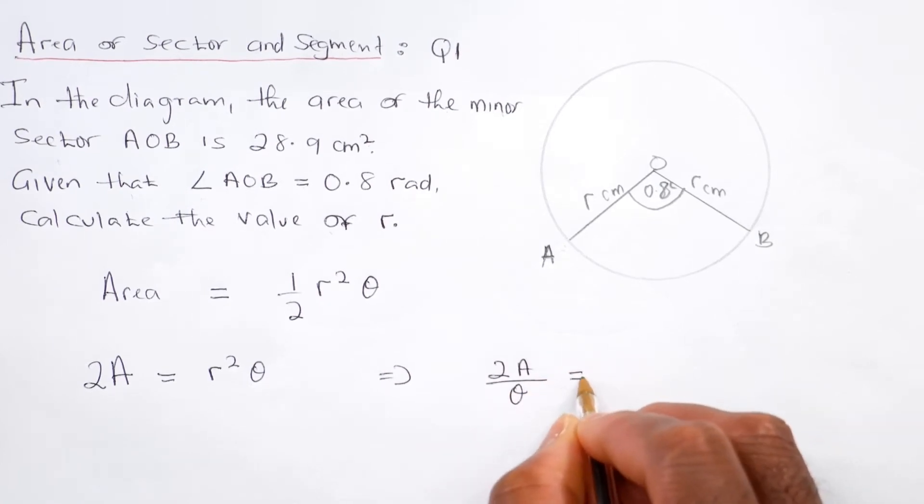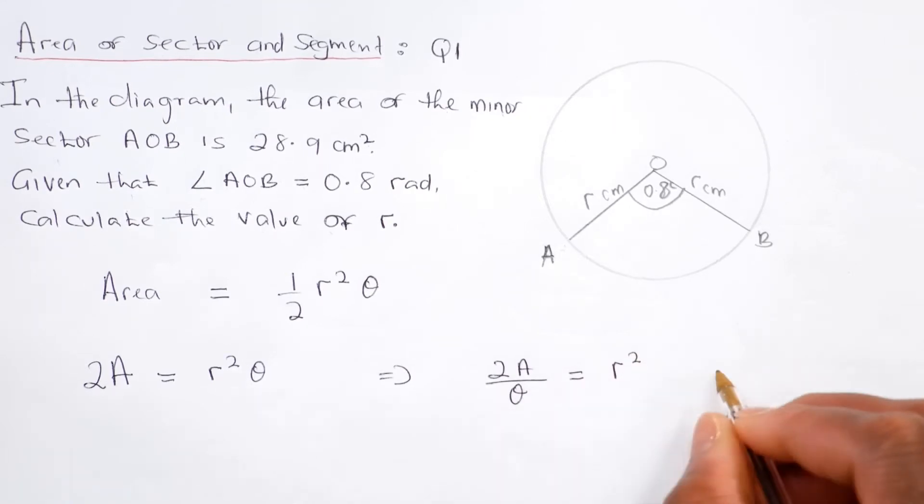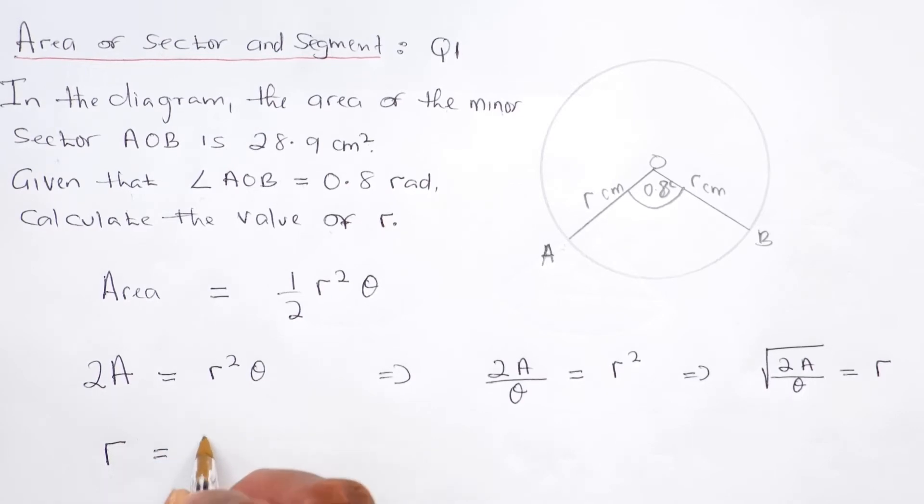And if you square root both sides, that implies that the square root of 2A over theta equals r. So now we know the radius r will be root 2 times 28.9 over 0.8.